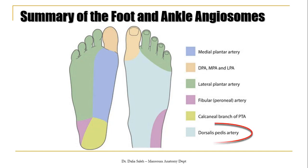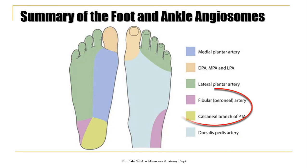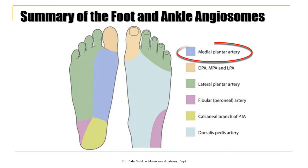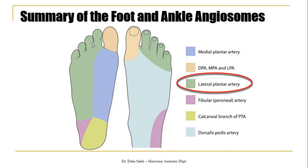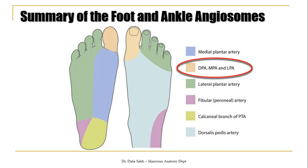To summarize the angiosomes of the ankle and foot: the dorsum of the foot is supplied by the dorsalis pedis artery; the heel is supplied by branches from both the posterior tibial artery and the peroneal artery; the medial third of the sole is supplied by the medial plantar artery; the lateral two-thirds of the sole and the lateral four toes are supplied by the lateral plantar artery; and the big toe is supplied by branches from the dorsalis pedis artery, the medial plantar artery, and the lateral plantar artery.